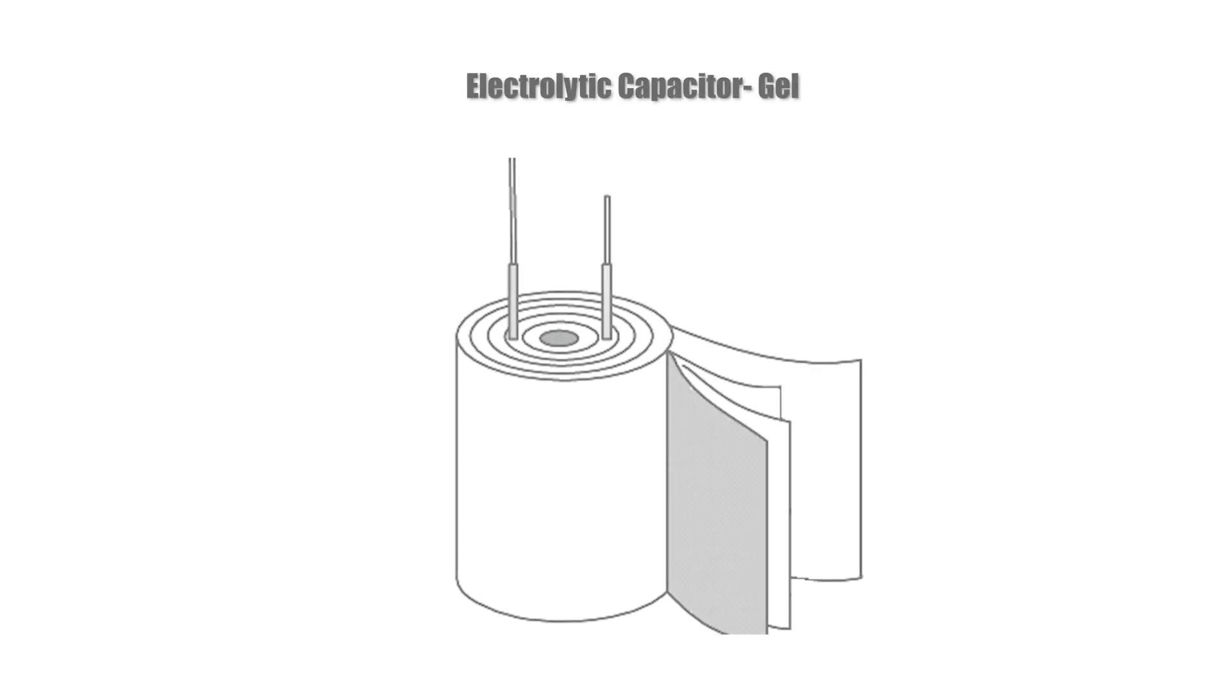An aluminum electrolytic capacitor with an electrolyte that isn't solid basically contains aluminum foil separated by a paper spacer which is saturated with a liquid or gel-like electrolyte. The foils in the spacer are wound in a way that resembles a D cell battery.